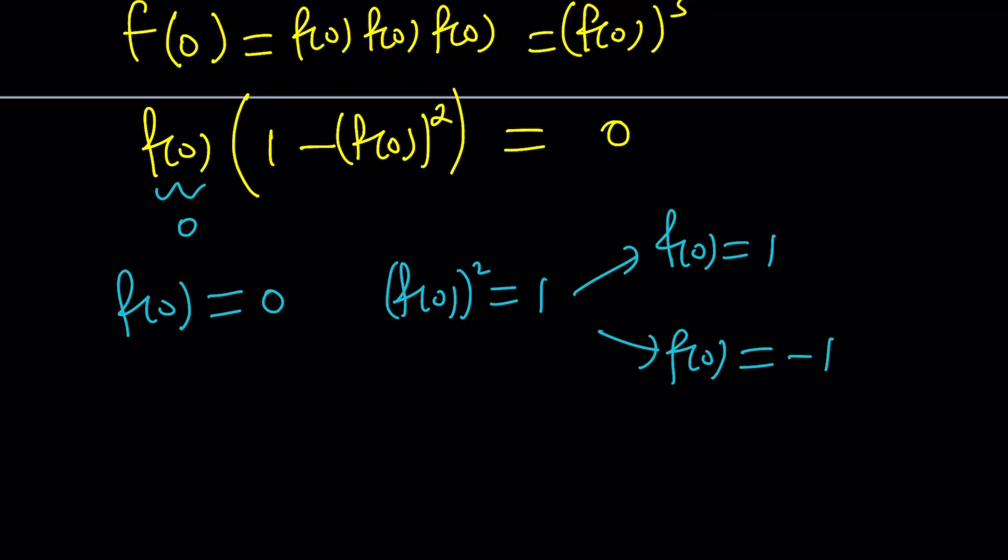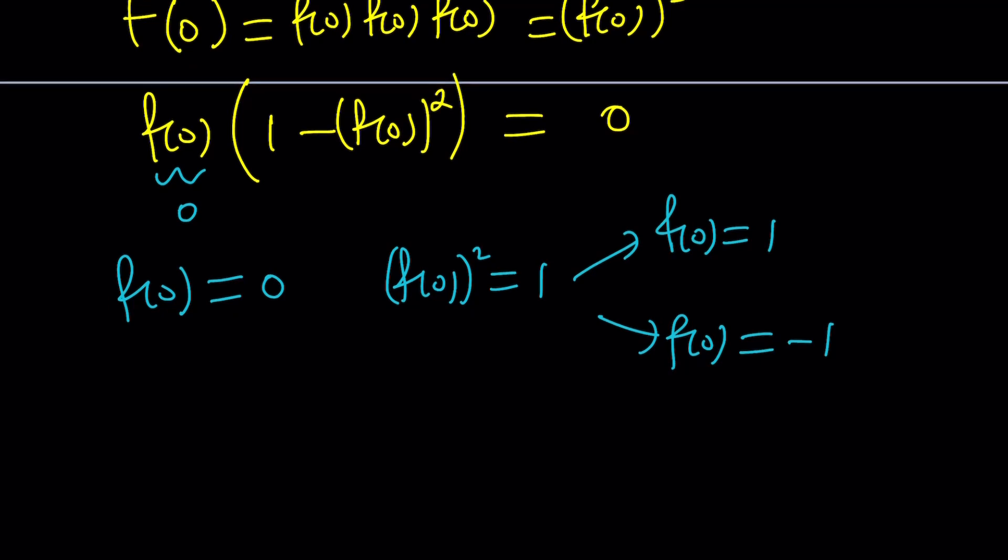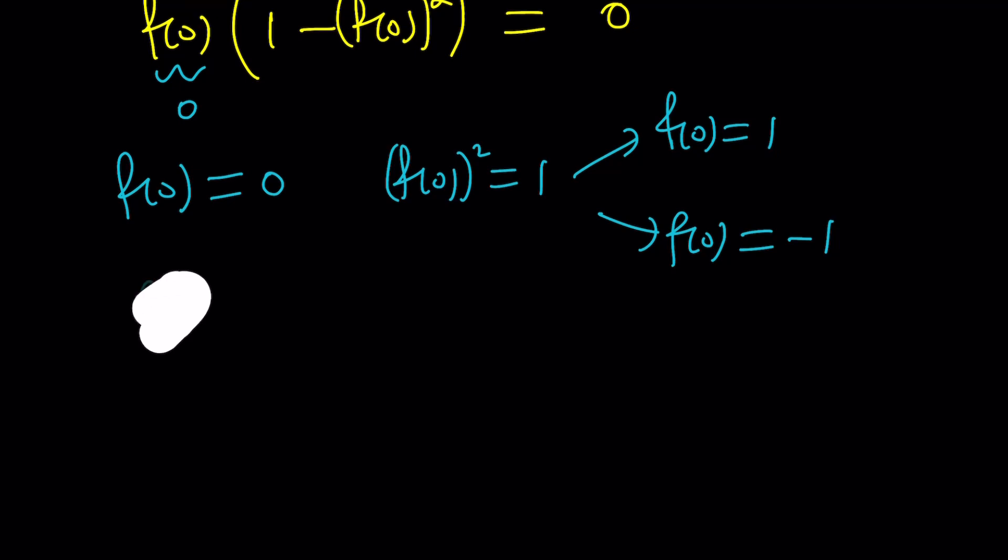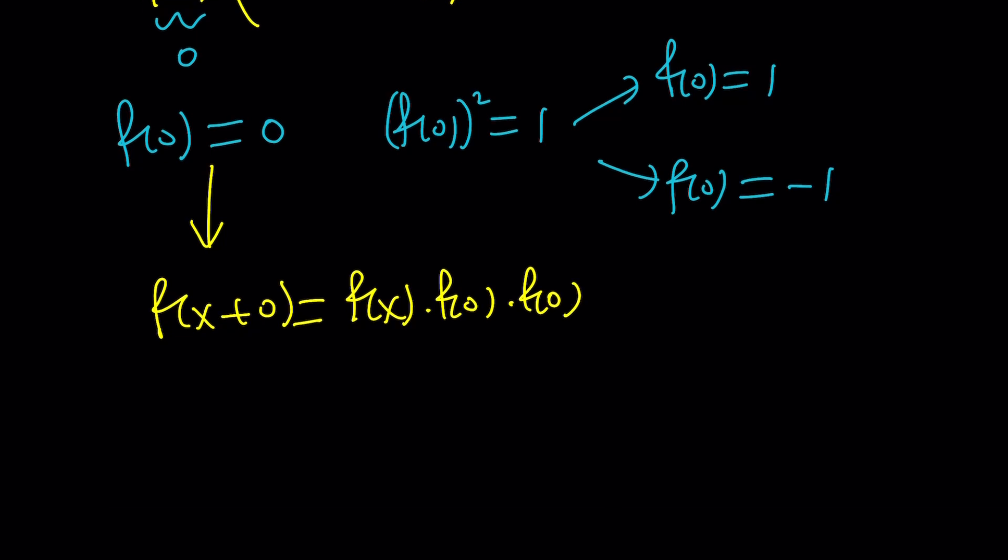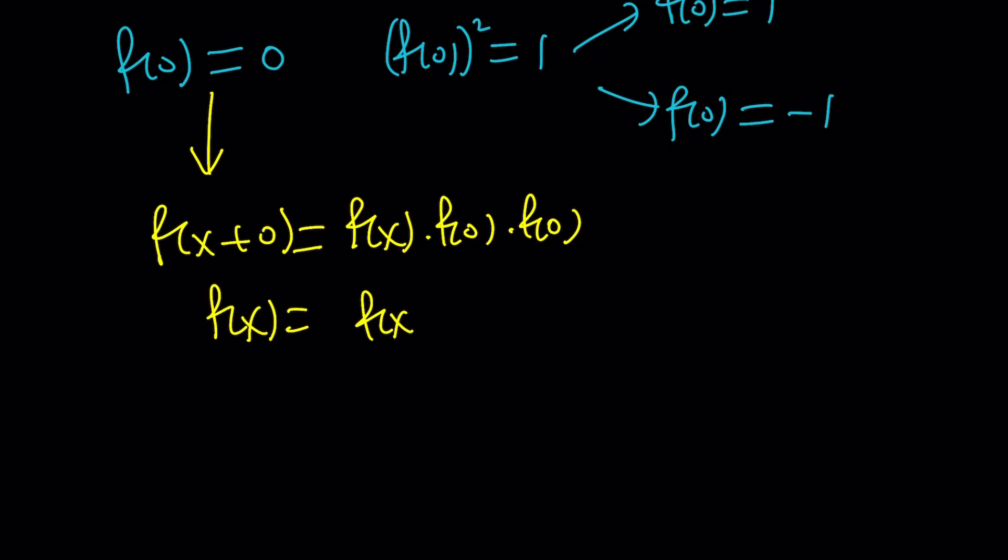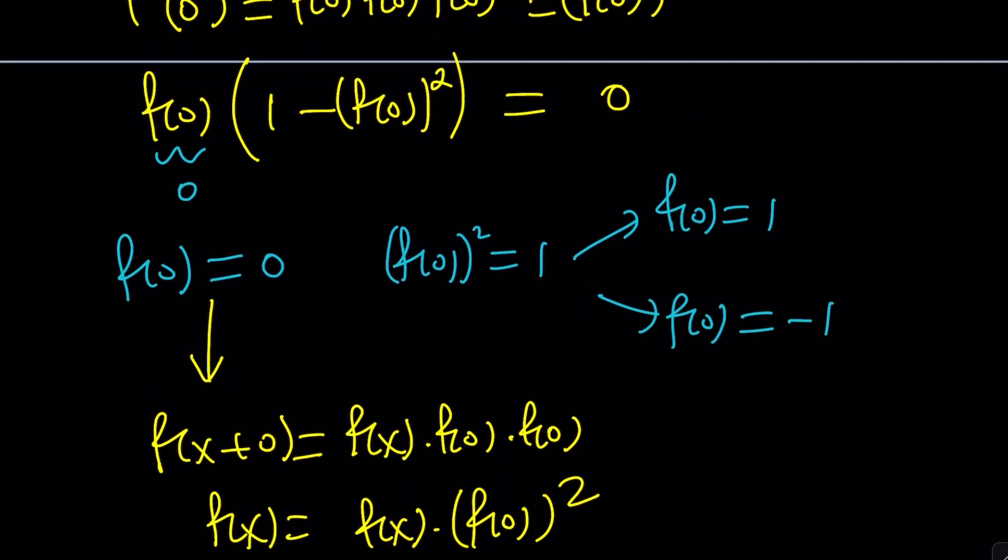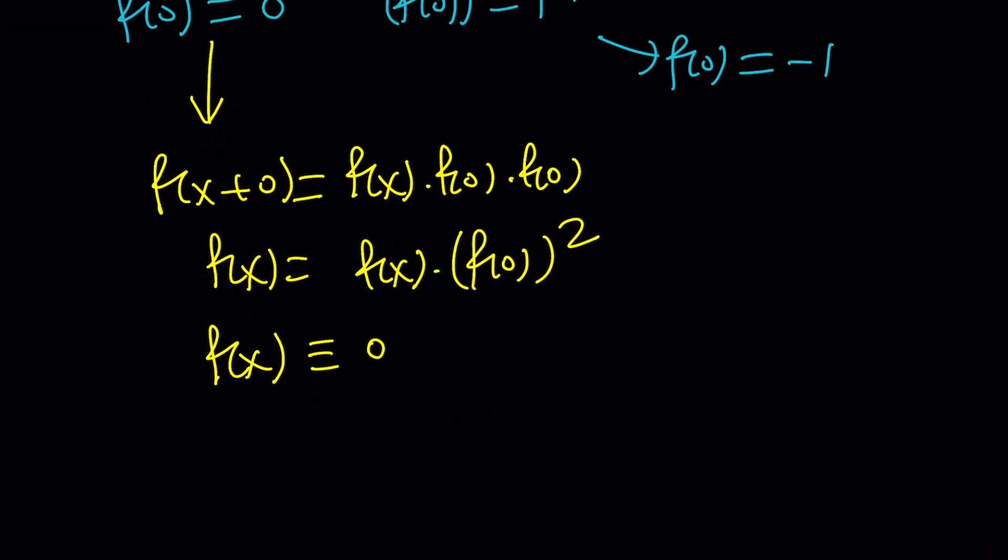Now, if f(0) is equal to 0, here's what happens. Here's the problem with the first one. If this is true, then we can basically replace y and z with 0 and get something like f(x+0) equals f(x) times f(0) times f(0). Now, what does that mean? It just means that f(x) equals f(x) times f(0) squared. And now when you replace f(0) with 0, this just means that f(x) will be equal to 0 identically.